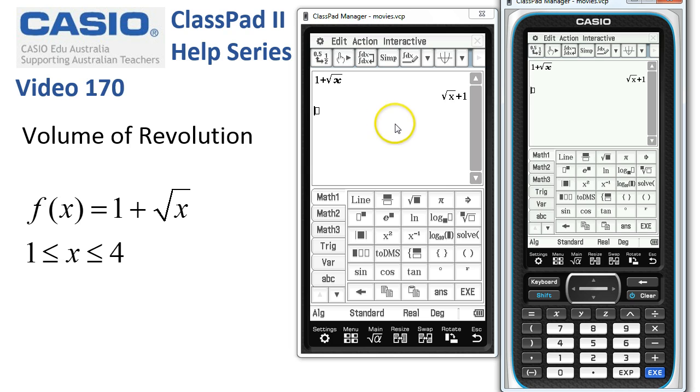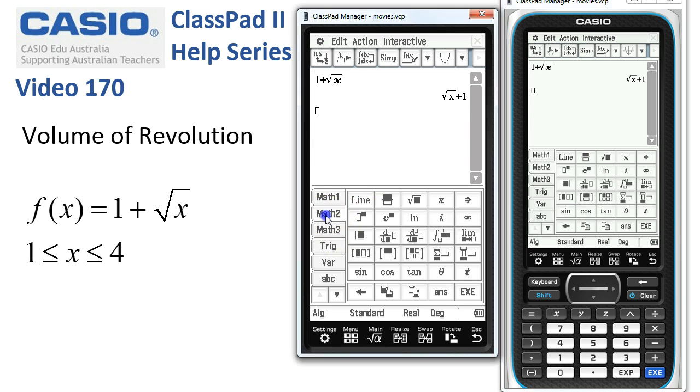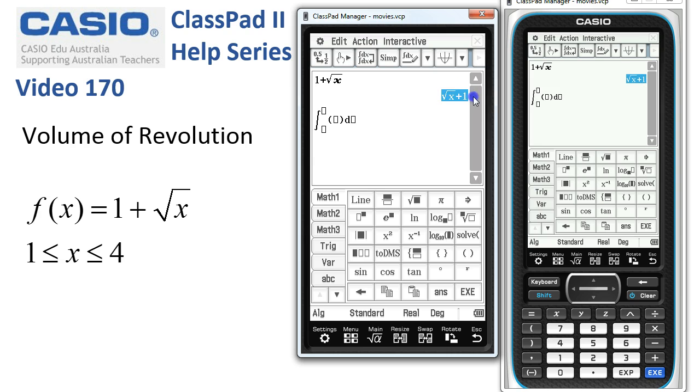And I'll tap execute just to make sure all's good. Now, we'll do it using an integral to start off with. So we'll tap onto math 2 to get the calculus templates. Here's our integral template. I'm going to go back up to math 1 and put in a set of brackets because we want to make sure we wrap the function inside a set of brackets to begin with.